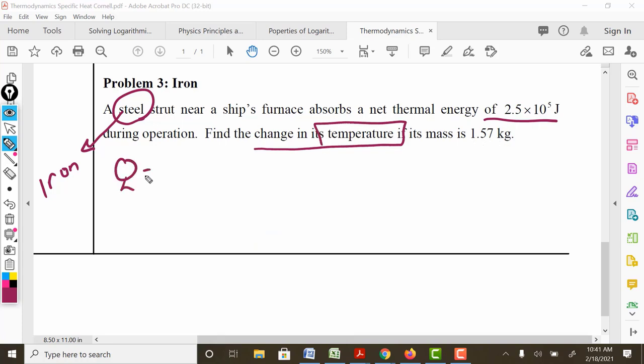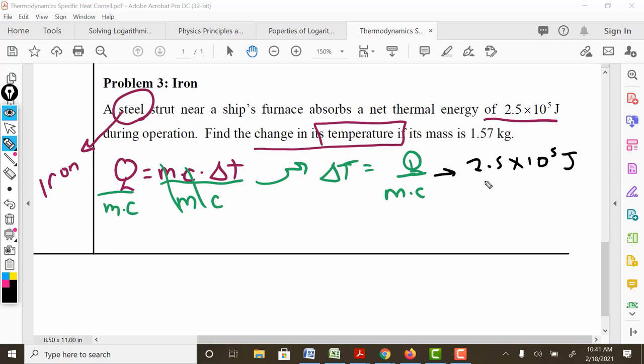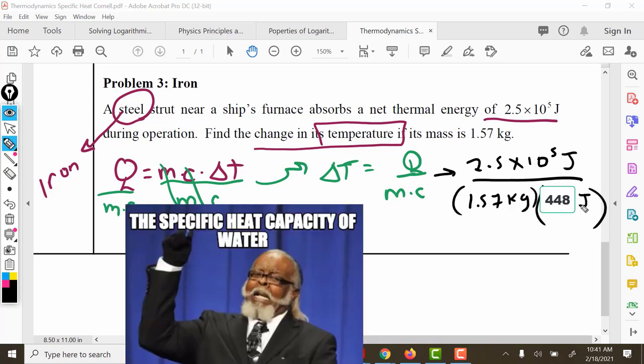So we begin with q is equal to m times c times delta t. But we're solving for delta t. We want to get delta t by itself. So we divide both sides by the mass and a specific heat. Delta t is q over m times c. The q is 2.5 times 10 to the fifth joule. The mass is 1.57 kilograms. 448 joules per kilogram Celsius.